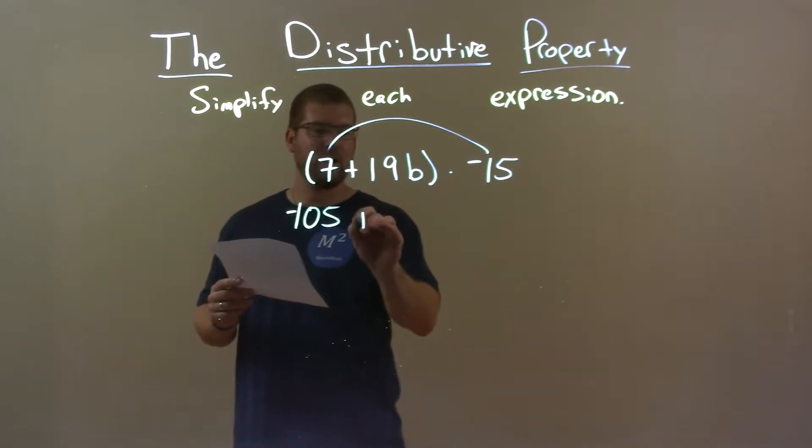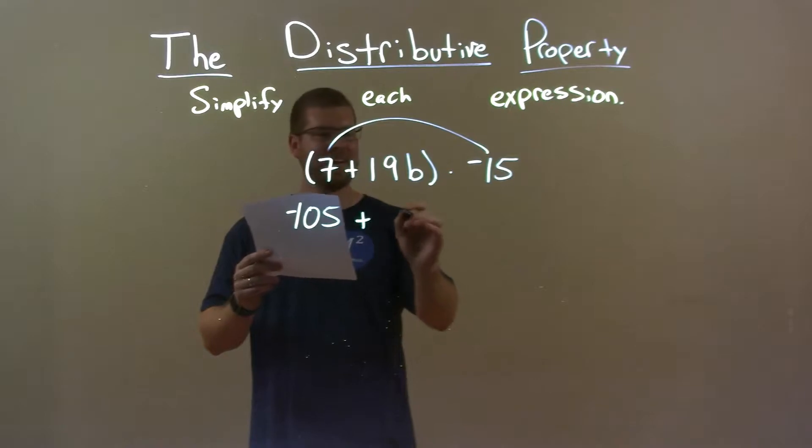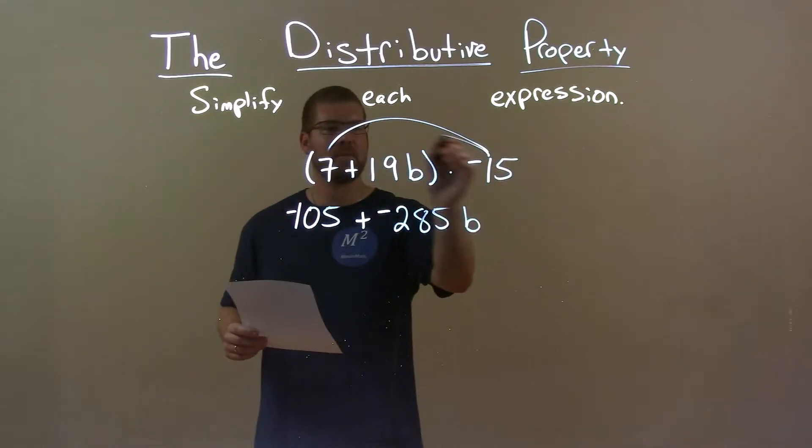So negative 105 plus now 19 times negative 15, take again my word for it, is a negative 285b, right? There's a b there. So it's negative 285b.